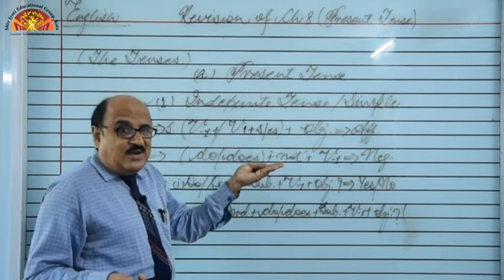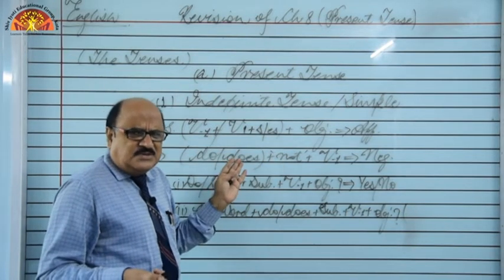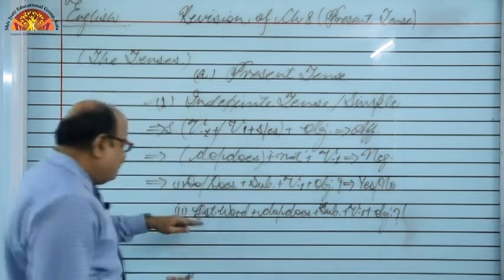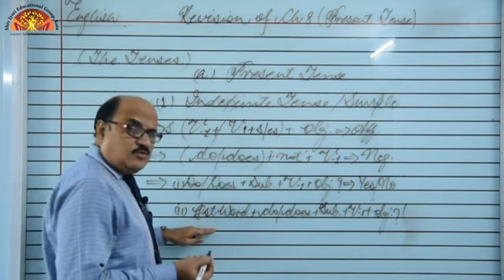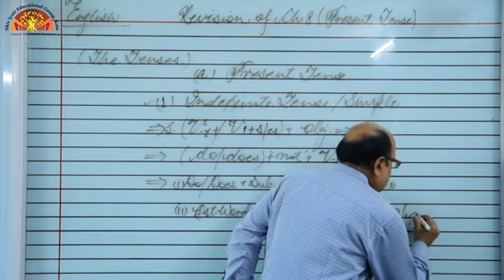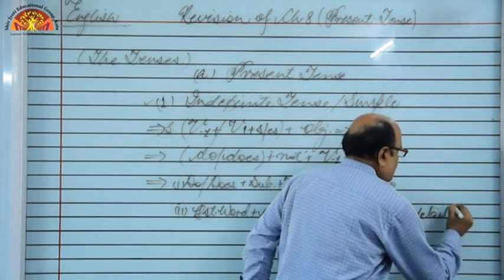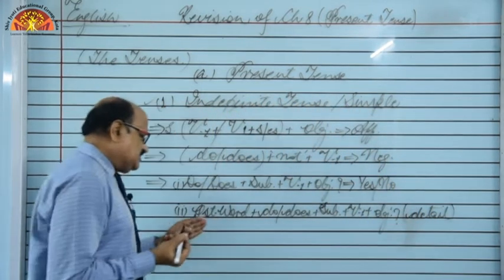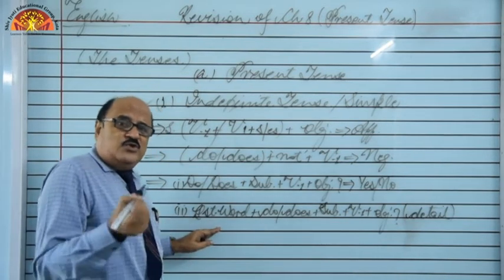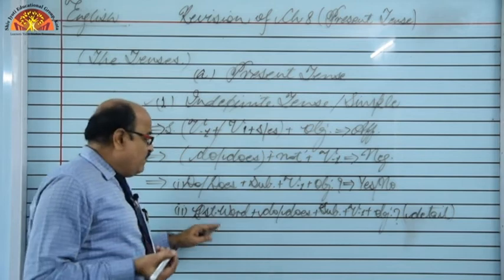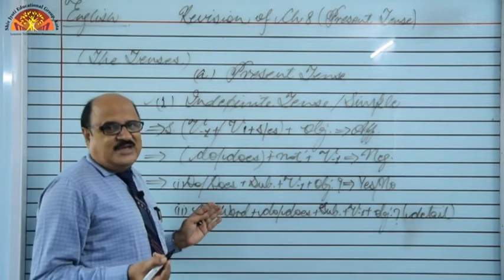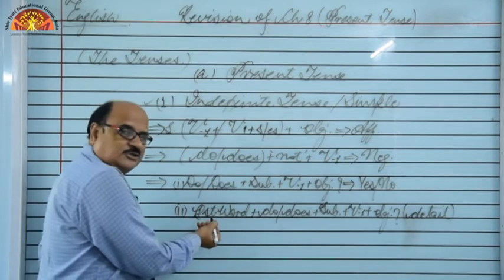The second kind of interrogative sentence means we have to begin with a question word. Certain question words are there, and thereafter the same structure: question word + do/does + subject + V1. First kind of interrogative sentences demand their answers in yes or no. But if you ask questions beginning with question words, those questions demand their answers in detail. For example: 'What is your name?', 'What do you want?', 'When do you wake up in the morning?' — we can never begin the answer with yes or no for such questions.